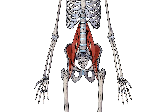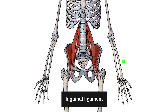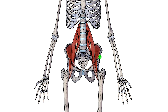Another important thing to remember about the iliopsoas muscle group is its relation to the inguinal ligament. The inguinal ligament is a nice landmark — it's a band of connective tissue connecting onto the anterior superior iliac spine and down to the pubic tubercle. You'll notice that the psoas major and the iliacus are both passing underneath the inguinal ligament as they travel down towards the femur. If you'd like to learn more about the psoas major and psoas minor, I'll put links in the description box below.